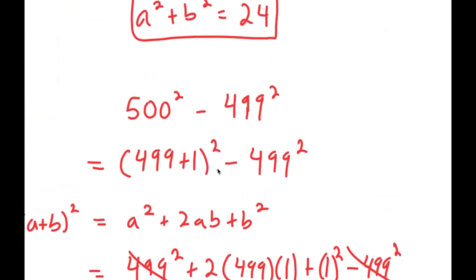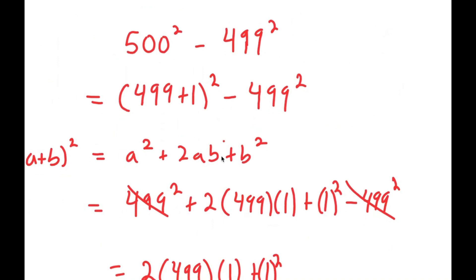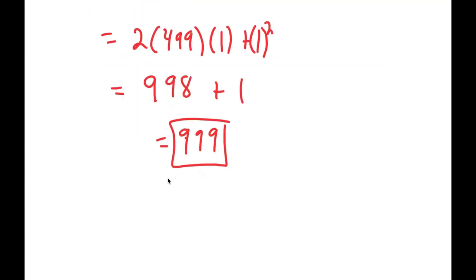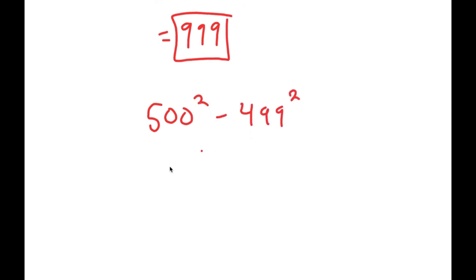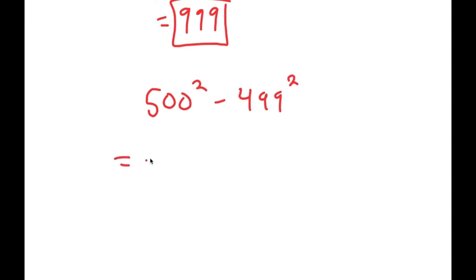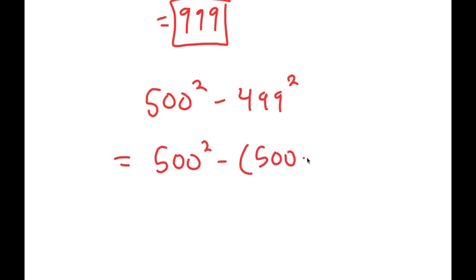Now I actually have another method of solving this. I have 500 squared minus 499 squared, and this time I'm going to write this as 500 squared minus 500 minus 1 squared.